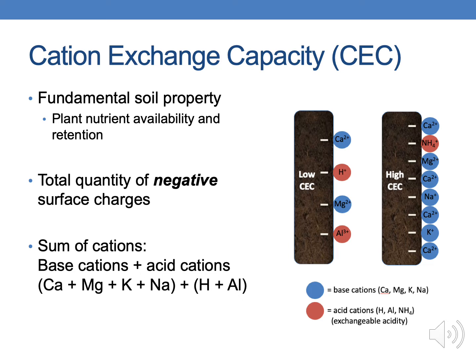CEC is a fundamental soil property — cation exchange capacity. It's the ability of that soil to retain nutrients and supply nutrients to the crops. It's really a measure of charge — the total quantity of negative surface charges on that soil. It's measured commonly in soil testing labs by summing cations. These positively charged ions, such as calcium, magnesium, potassium, and sodium, are our base cations. Then we have acid cations, including hydrogen, aluminum, ammonium, manganese, iron, etc. They all have positive charges and they stick to the soil because soils are typically negatively charged.